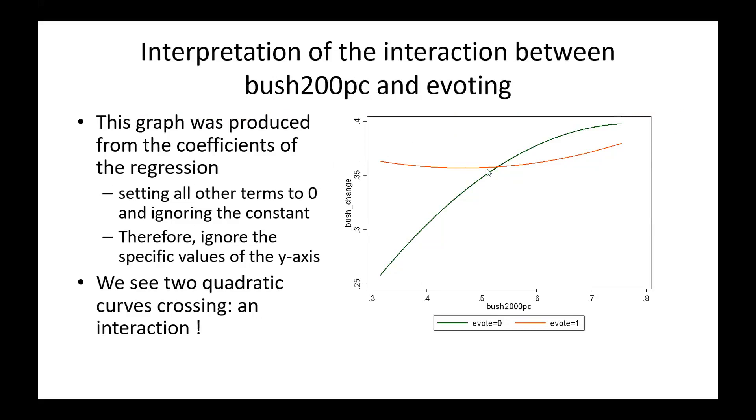Now, what I've done here to plot this, I have the code a little later, is I've ignored all the coefficients of all other variables. I'm concentrating on the five variables. I'm also ignoring the intercept. So the scale here does not matter. We're just looking at the shape of the curve. And what we see here is a mild quadratic effect here and a mild quadratic effect here. The two curves are crossing, which indicates the interaction. The interaction is definitely there as far as the model is concerned.